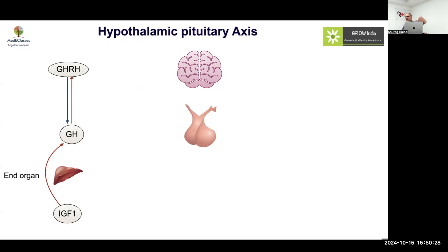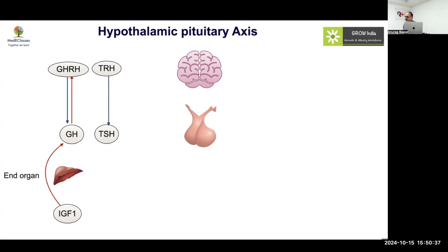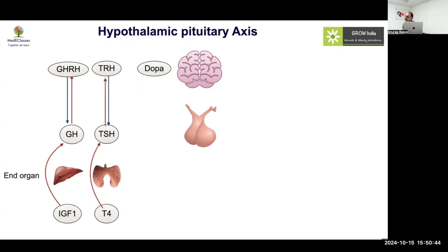Growth hormone inhibits GHRH, which is a simple mechanism. IGF-1 inhibits GH, which is a feedback mechanism. The second group is thyrotropin releasing hormone, which regulates TSH, which regulates thyroxine. Thyroxine inhibits TSH and TRH is being inhibited via TSH — this is a straightforward single mechanism.